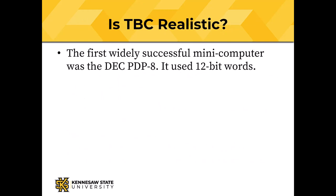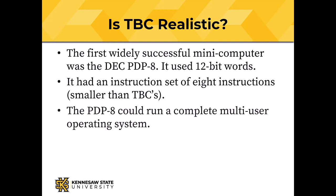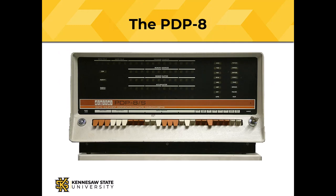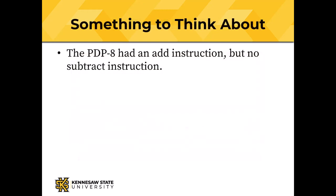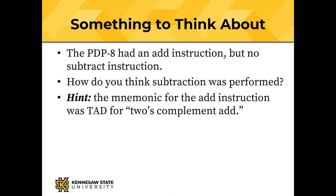You might wonder whether TBC is realistic. The first widely successful minicomputer was the Digital Equipment Corporation PDP-8. It used 12-bit words and had an instruction set of only 8 instructions — smaller than TBC's — but the PDP-8 could run a complete multi-user operating system. Something for you to think about: the PDP-8 had an add instruction but no subtract instruction. So how do you think subtraction was performed? Here's a hint: the mnemonic for the add instruction was TAD, for two's complement add.